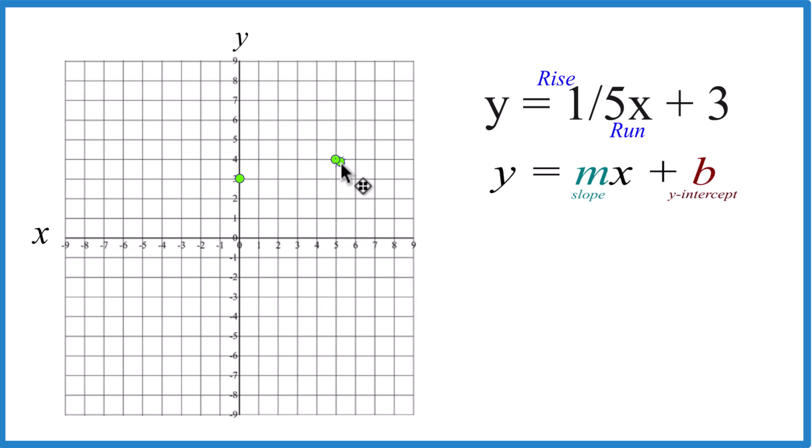From there, we do it again. Rise one, go over one, two, three, four, five, but we're off our graph.